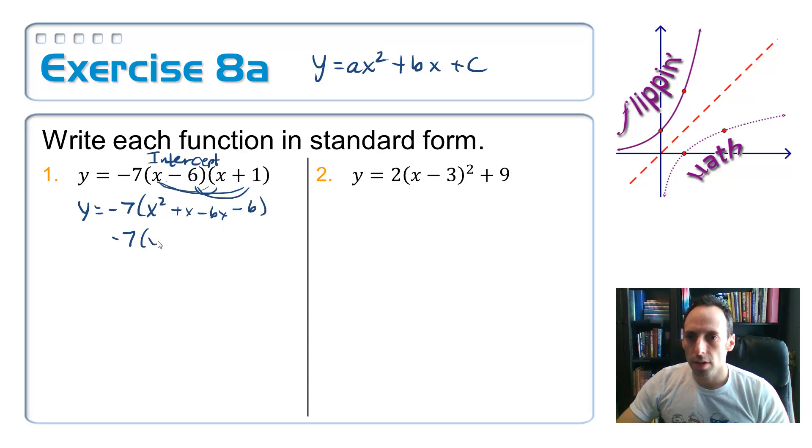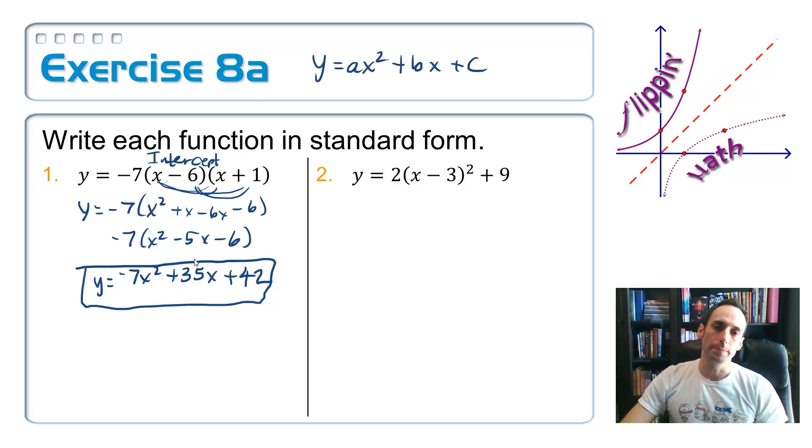Simplify all that inside the parentheses there. x squared minus 5x minus 6. And then finally, let's distribute that 7 through there. And we'd have negative 7x squared plus 35x plus 42. y equals all of that. There it is in standard form. How easy is that?